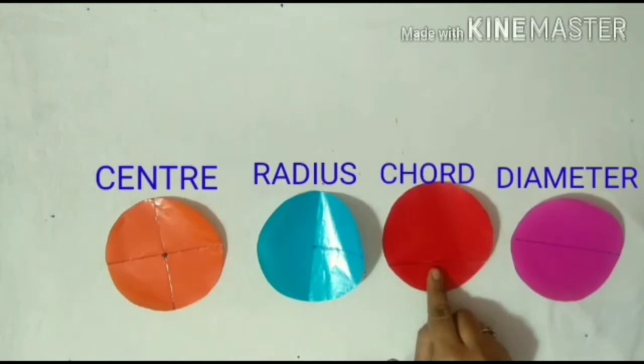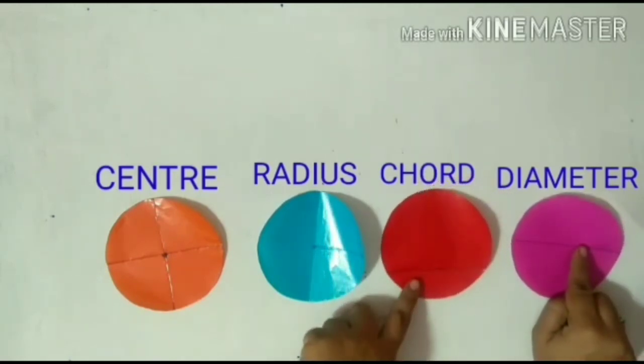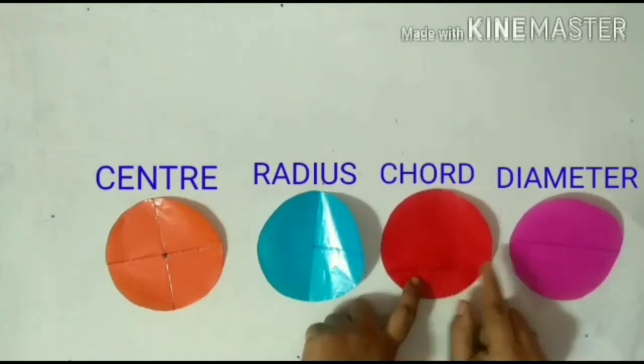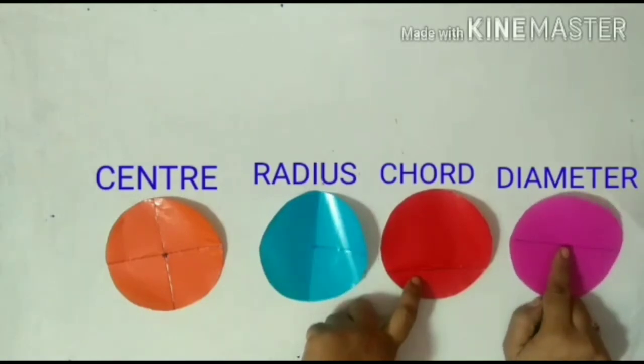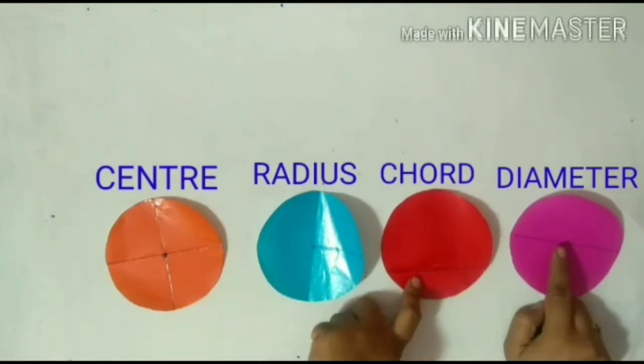The difference between the diameter and the chord is diameter always passes through the center of a circle, and the diameter too is a chord of the circle.